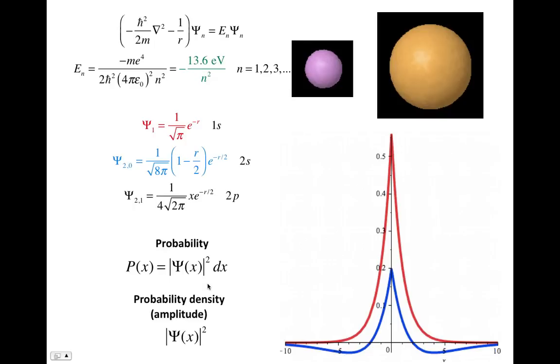So the wave function squared itself is the probability density, because it is the probability per some volume or per some length. And this is also known as the amplitude.